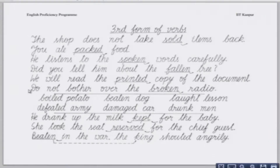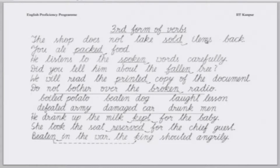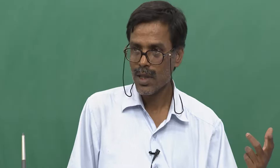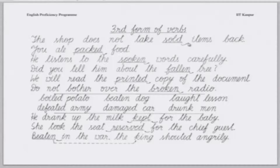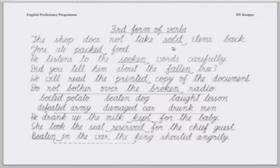The shop does not take sold items back. — 'Dukan biki hui chijay vapas nahi leta hai.' What kind of items? Sold items. So, the word 'sold' qualifies the noun 'items' — it is doing the task of qualifying this noun. This is the typical use of the third form of verbs as an adjective.